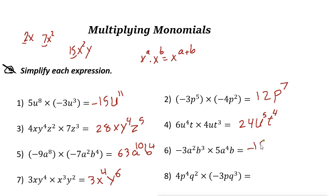Negative 3 times 5 is negative 15. A squared times a to the power of 4 is a to the power of 6. And b cubed times b is b to the power of 4.